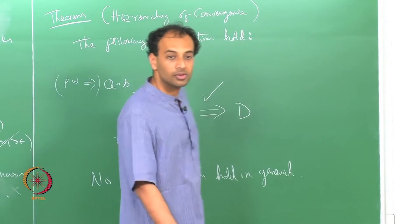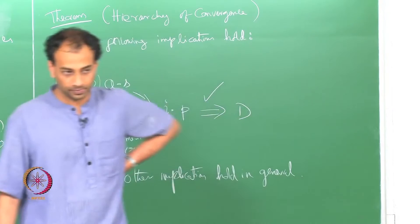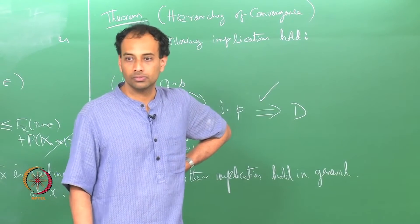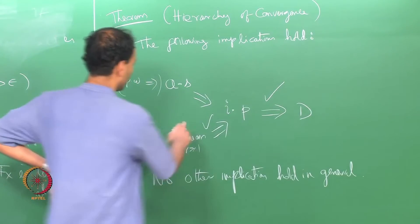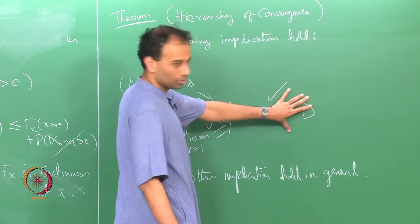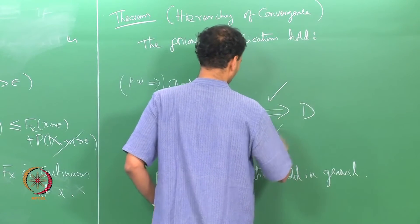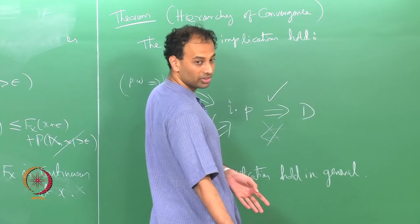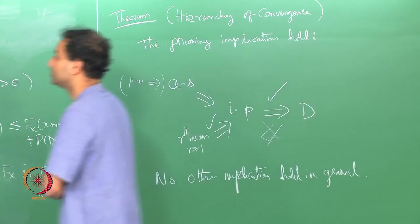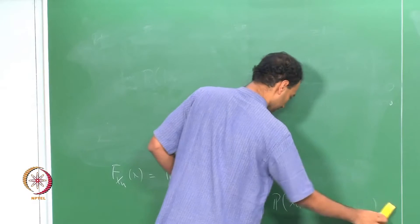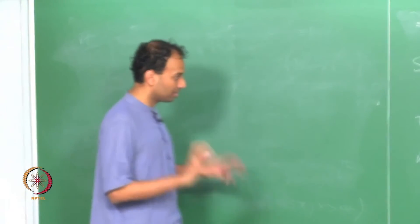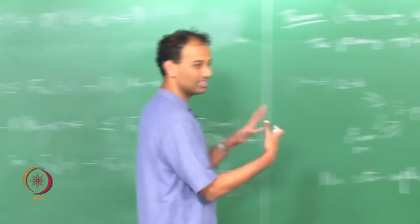So this direction is done. Now to settle the other side of the story, we need to prove that the reverse implication does not hold by producing a counter-example. The motivation is: convergence in distribution just means the distribution functions are converging; it does not mean X_n and X are getting close in any sense.